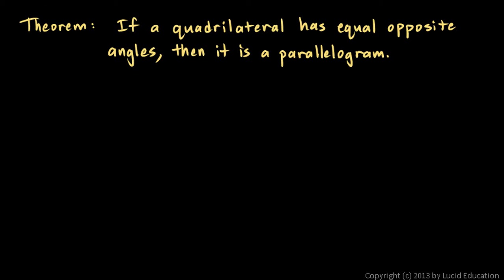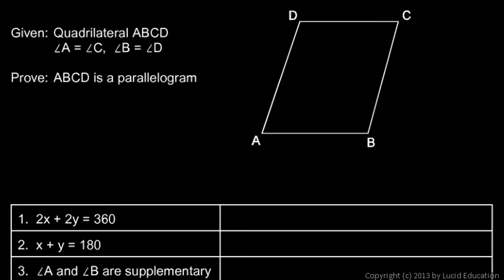Here's the next theorem we will prove: if a quadrilateral has equal opposite angles, then it is a parallelogram. Here's the diagram — same picture as before — quadrilateral ABCD. What we're told this time is that angle A is equal to angle C, and angle B is equal to angle D.